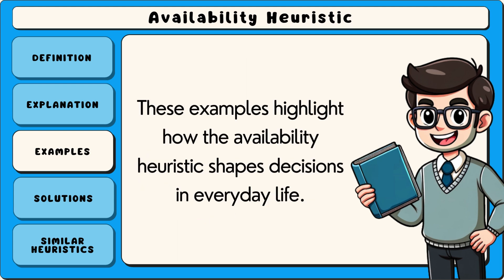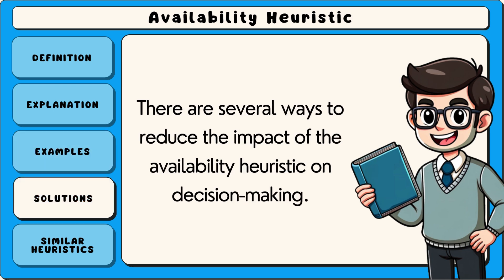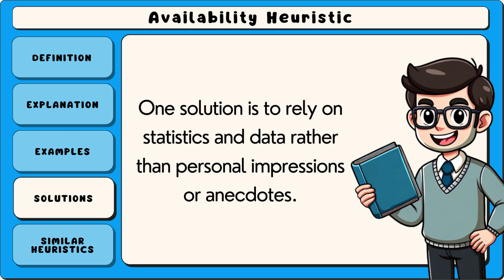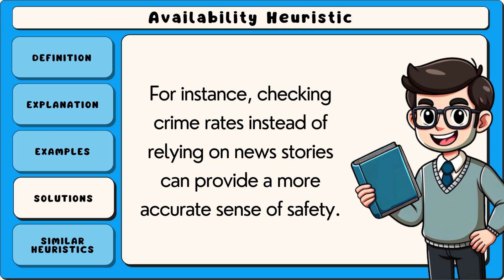These examples highlight how the availability heuristic shapes decisions in everyday life. There are several ways to reduce the impact of the availability heuristic on decision making. One solution is to rely on statistics and data rather than personal impressions or anecdotes. For instance, checking crime rates instead of relying on news stories can provide a more accurate sense of safety.